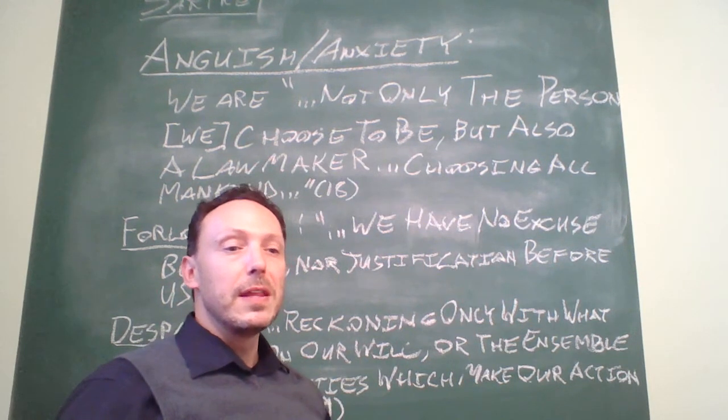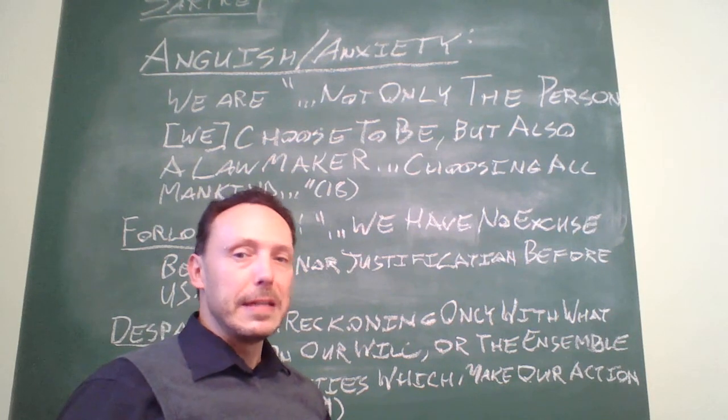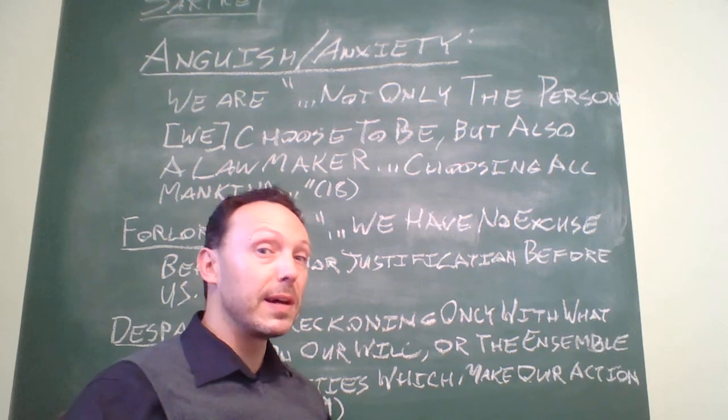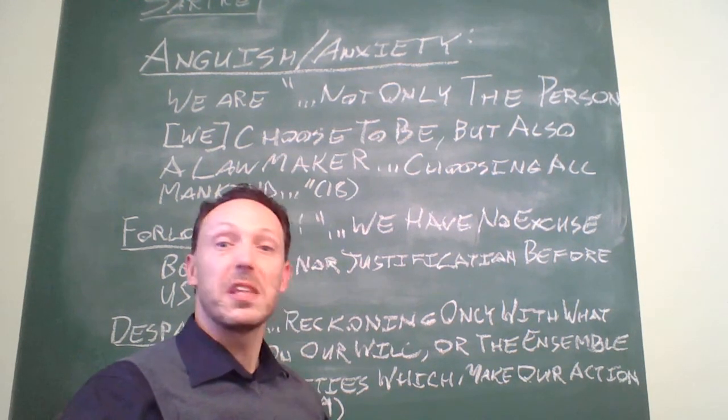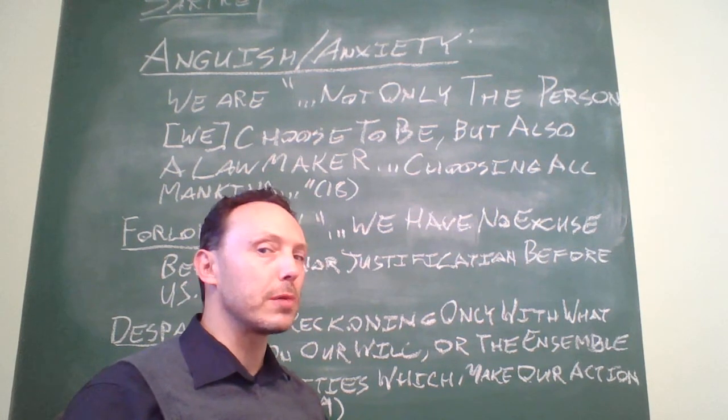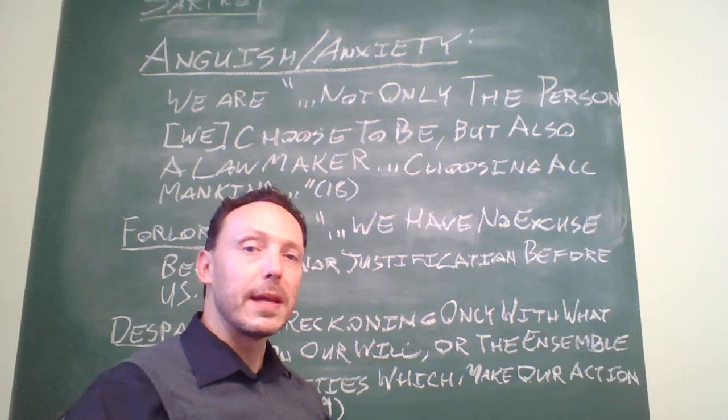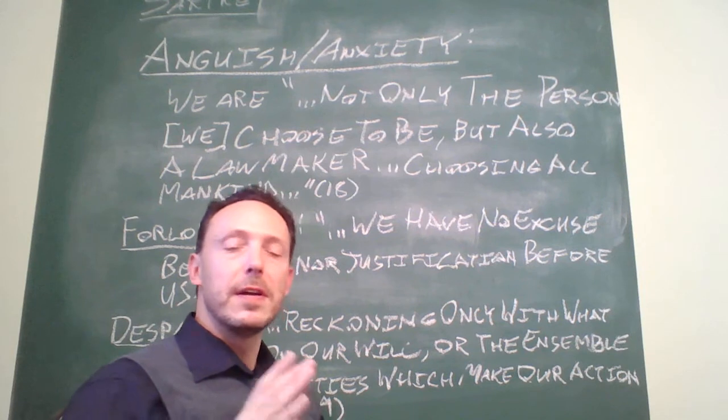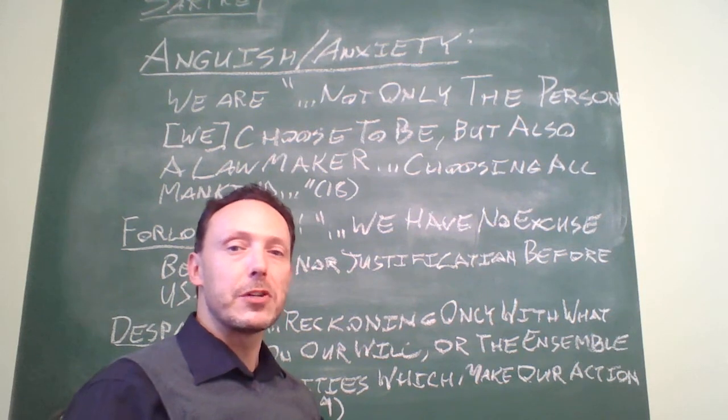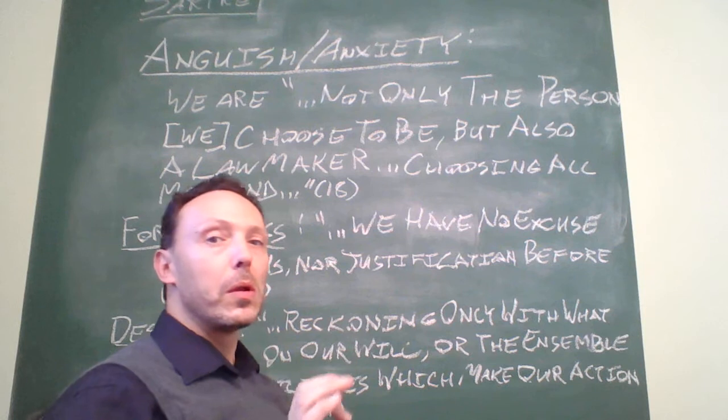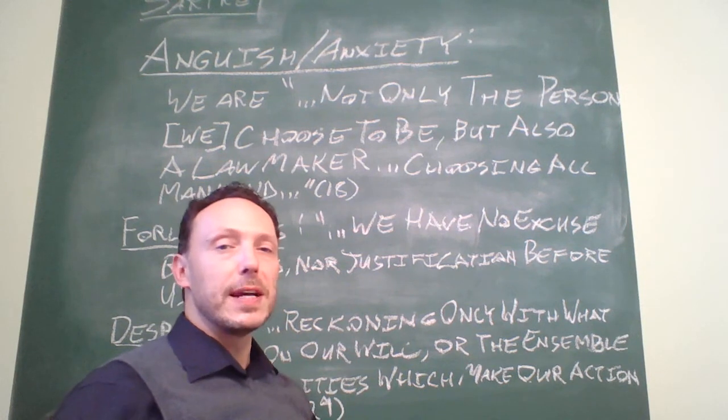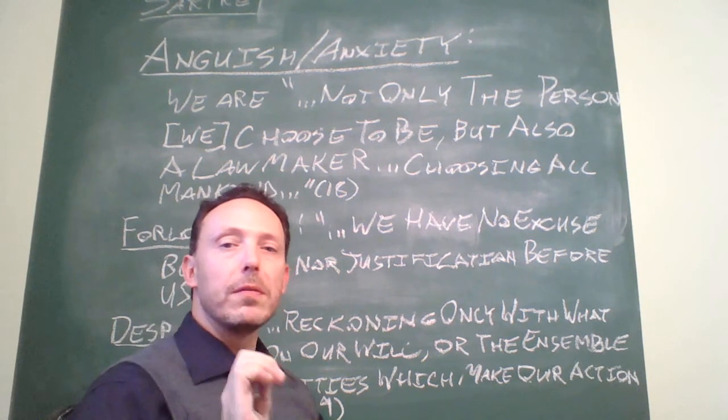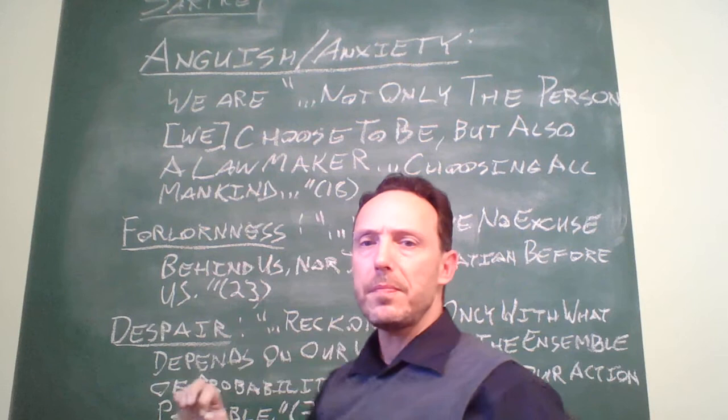So, that human beings slaughter each other as a matter of course, that reflects on each and every one of us. That we lie, that we steal, that we cheat, that we treat one another as though we are things rather than people. That is something that we all have to live with as a feature of humanity and our condition. The goal becomes, for the existentialist, to live in a way that you would will all of humanity to live.